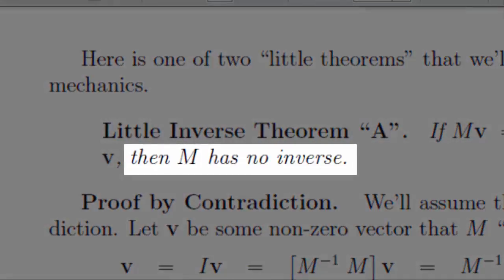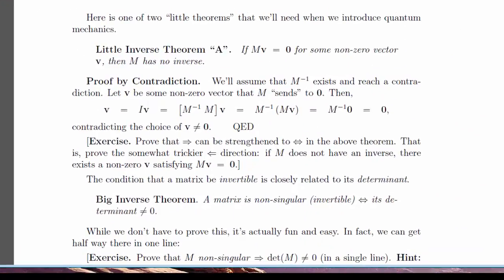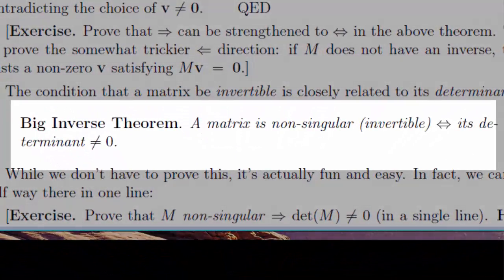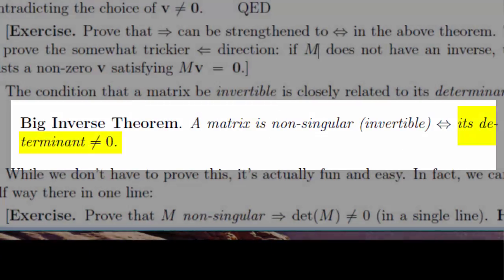Problem is, most matrices don't have inverses. But there's a trick we'll learn to find out which do. A matrix has an inverse, if and only if, drumroll please, its determinant is non-zero.